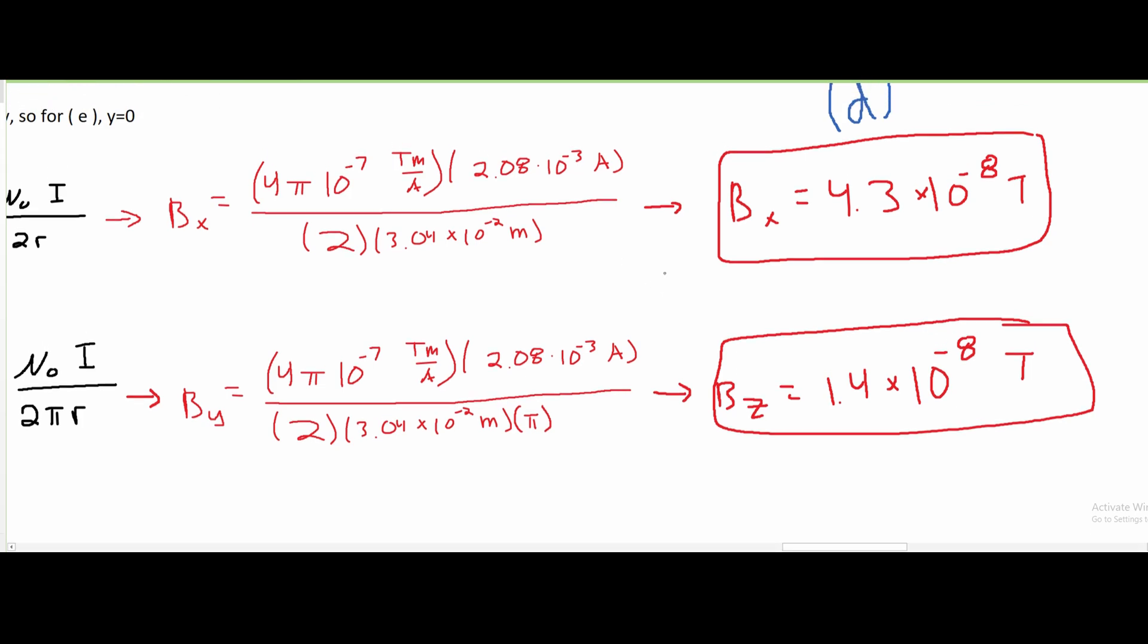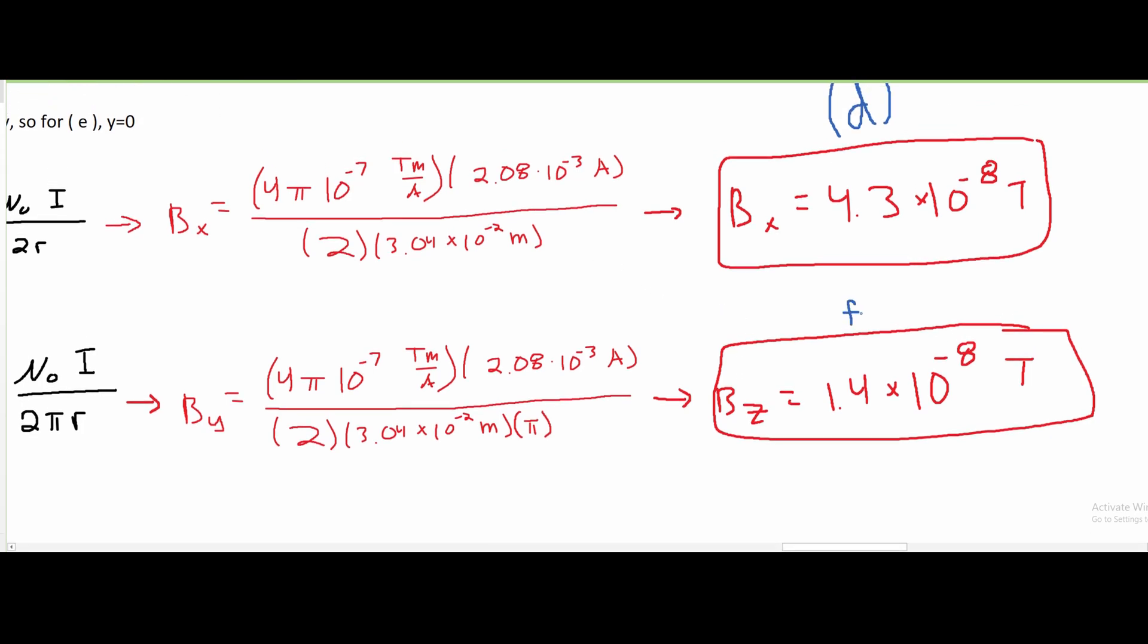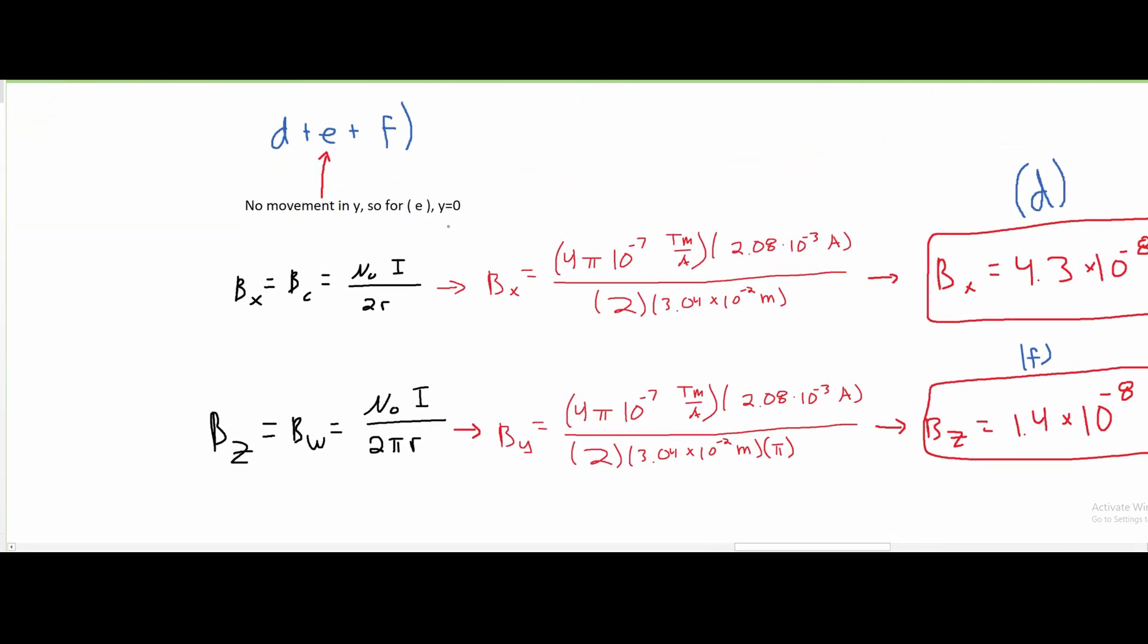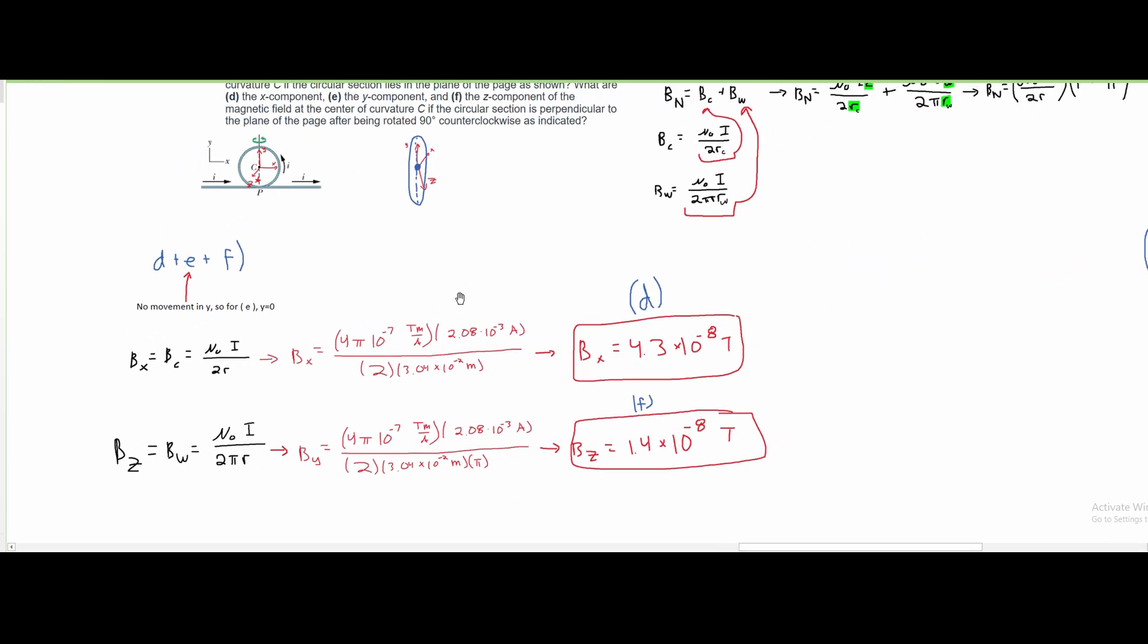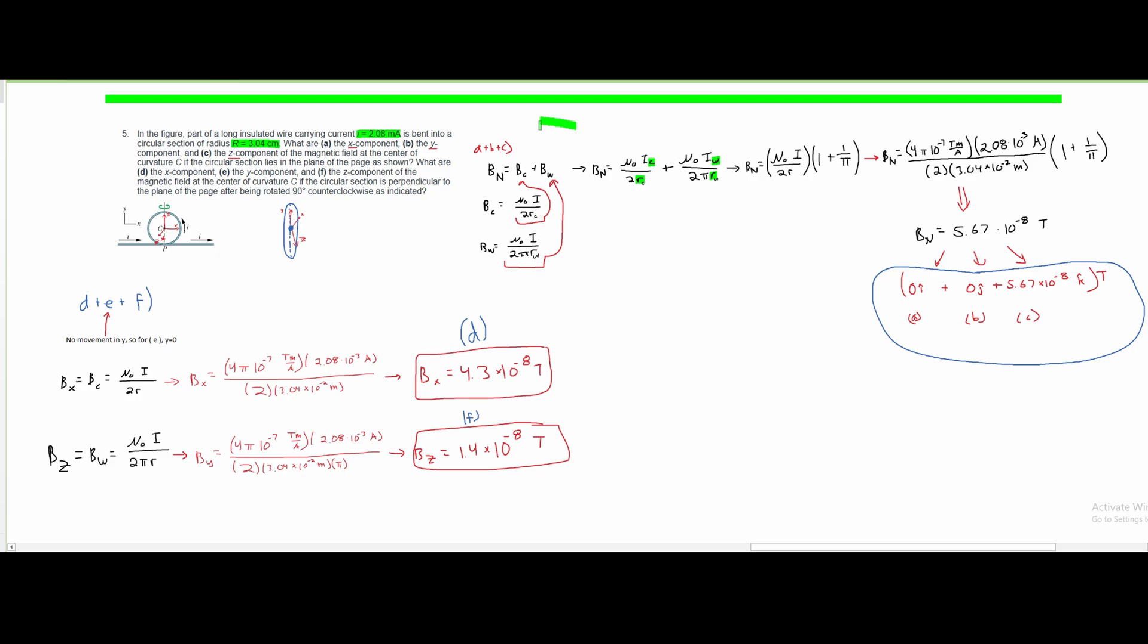And this is going to be the answer for f. And again since there's no movement in our y for e, our y is going to equal 0. We have our a portion done and our b portion done.